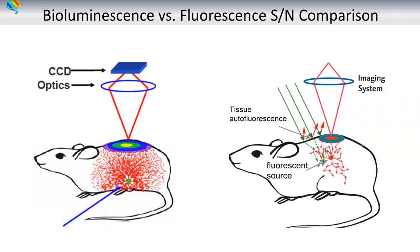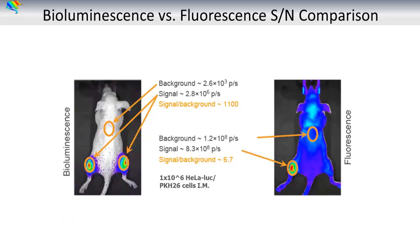For fluorescence, one does not need to inject a substrate, but we expose the animal to an exterior excitation light source, represented by green arrows. The excitation light penetrates the tissue, excites the source, and subsequent photons are emitted that scatter throughout the tissue, generating a surface radiance which is then captured by the imaging system. While signal brightness of bioluminescent sources is generally lower than fluorescent sources, we still obtain higher sensitivity because of the very low level of autoluminescent noise, around 10 to the third photons per second, compared to the high autofluorescent noise in the order of 10 to the eighth photons per second, caused by non-specific excitation light-induced autofluorescence of proteins in the skin.